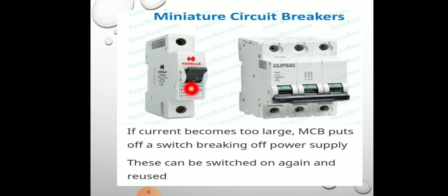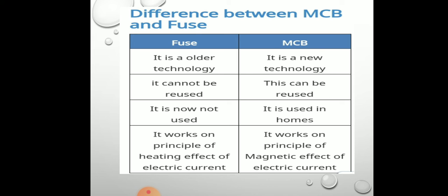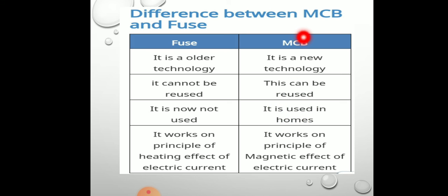After the fault is corrected, the MCB can be switched on again and reused. After reducing the overload, we can switch on the miniature circuit breaker again. With a fuse wire, we have to keep changing it — that is the disadvantage. Nowadays, modern homes use miniature circuit breakers. The difference is: fuse is older technology, MCB is new. Fuse cannot be reused — we have to change the wire. But MCB can be reused by switching on again. The function of both is the same.